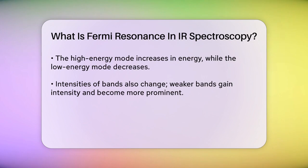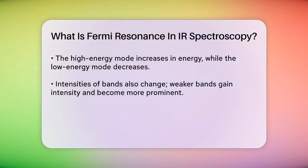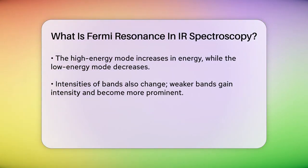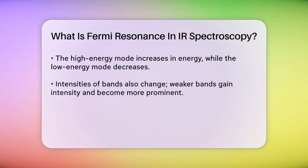Let's consider an example to make this clearer. In carbon dioxide, CO2, the bending vibration and the symmetric stretch vibration can interact through Fermi resonance. Here, the bending vibration's first excited state has a similar energy to the symmetric stretch's first excited state, and they both have the same symmetry. This interaction causes the bands to split and shift, resulting in two strong bands in the spectrum.